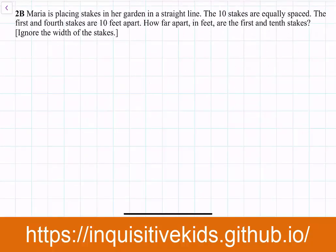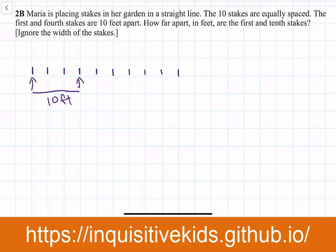Here is 2B, our second problem of this contest. Maria is placing stakes in her garden in a straight line. The 10 stakes are equally spaced. The first and fourth stakes are 10 feet apart. How far apart in feet are the first and tenth stakes? We can ignore the width of the stakes. First, we can draw out the information given in the problem. We know that there are 10 stakes in a straight line and they are equally spaced. The first and fourth stakes are 10 feet apart. How far apart are the first and tenth stakes?